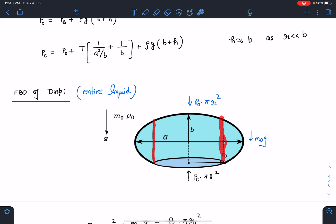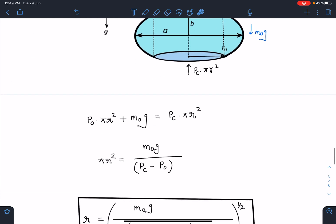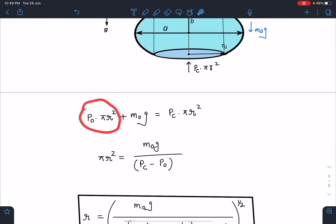The p₀ forces will cancel out, so the overall effective force by atmospheric pressure on this drop in downward direction is p₀πr². At the bottom point, taking the entire liquid so surface tension becomes internal force. This becomes pCπr² upward and weight m₀g is downward.